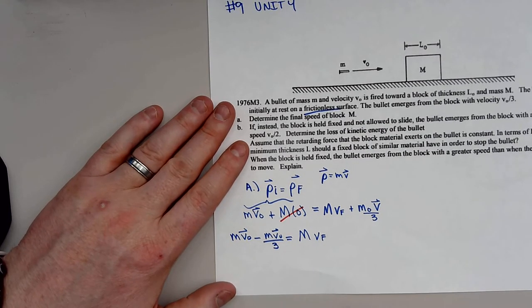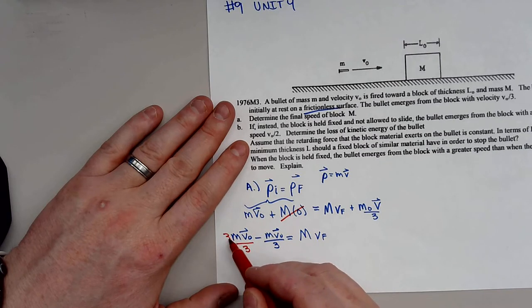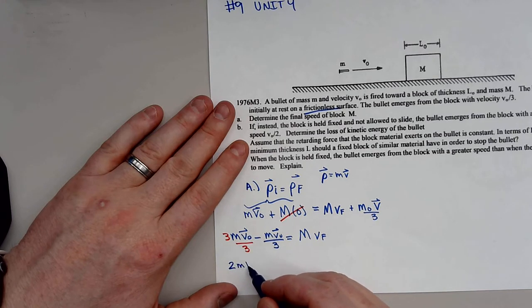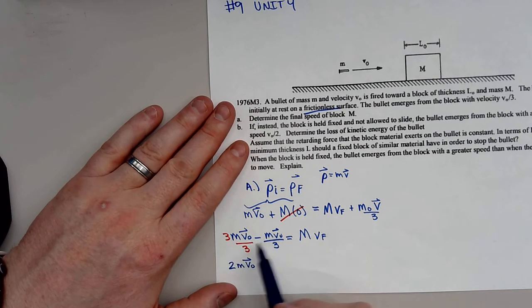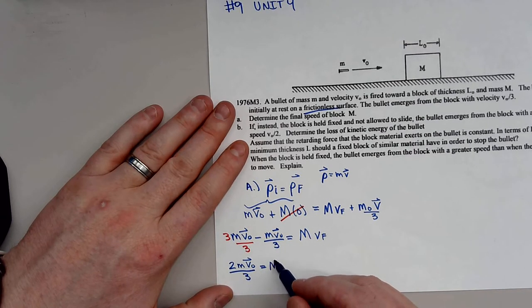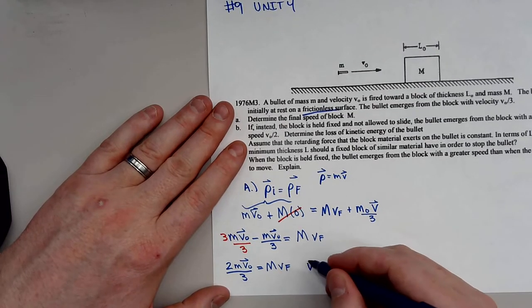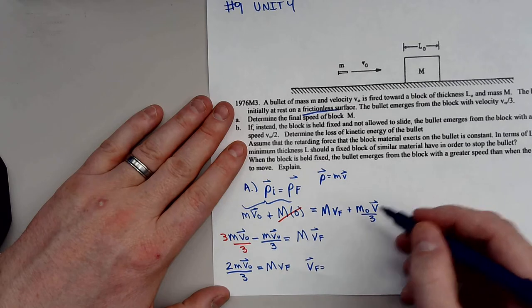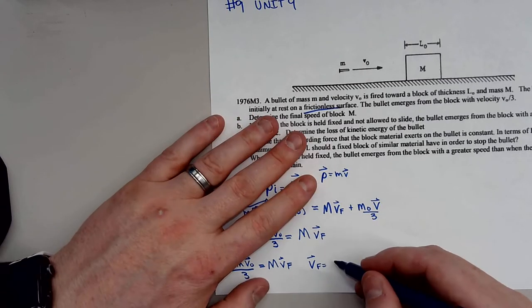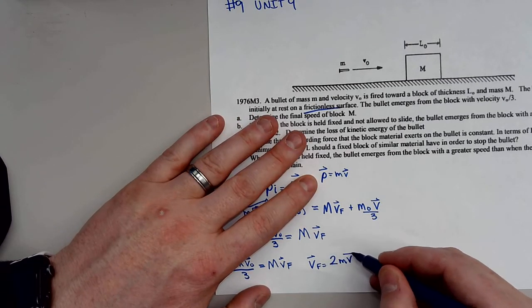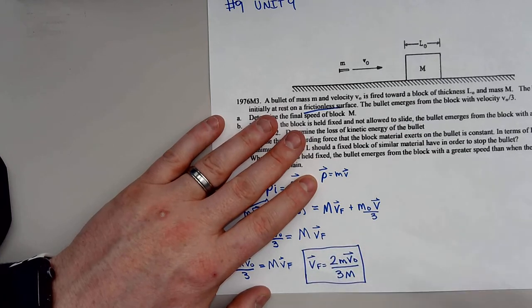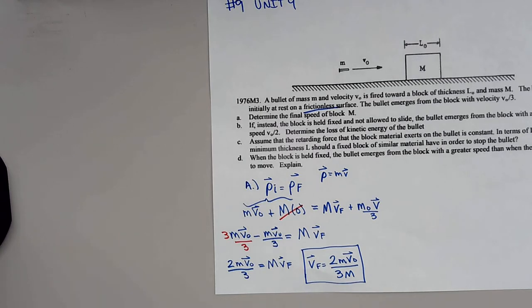We have to do some fraction work here — turning the first term into three over three. So that's just two m·V naught over three equals big M·VF. Solving for VF, we divide both sides by big M, giving VF equals two little m times V naught divided by three big M. That's how fast the big block is moving after the collision.